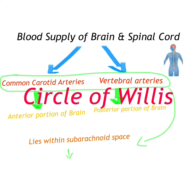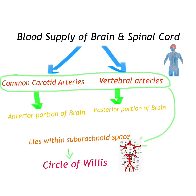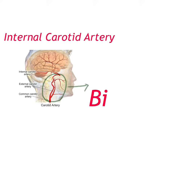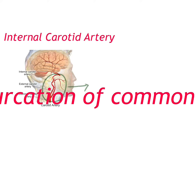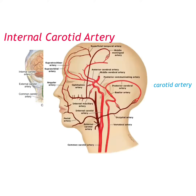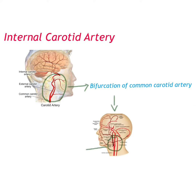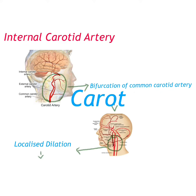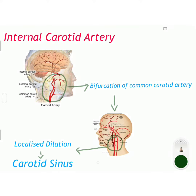First we will discuss the internal carotid artery. The internal carotid artery begins at the bifurcation of the common carotid artery. It possesses a localized dilatation known as the carotid sinus. We will discuss some of the cerebral portion branches of the internal carotid artery.